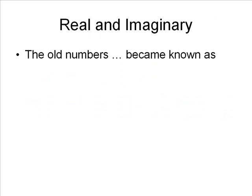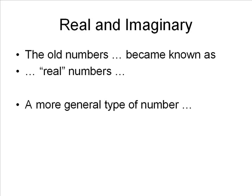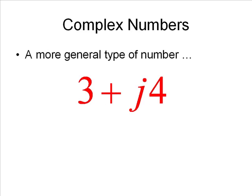By juxtaposition, of course, the old numbers became known as the real numbers. Soon, another more general type of number appeared — a number with a real part and an imaginary part — and they called that a complex number.